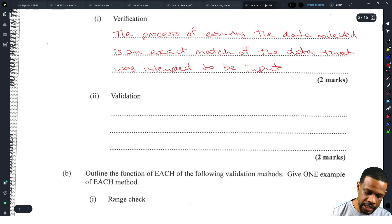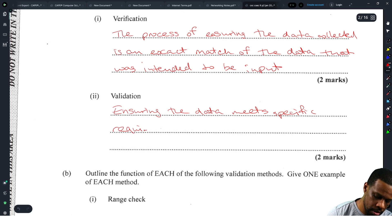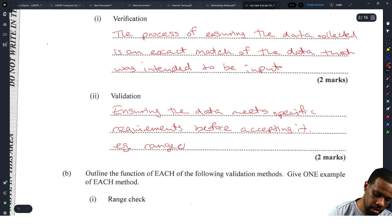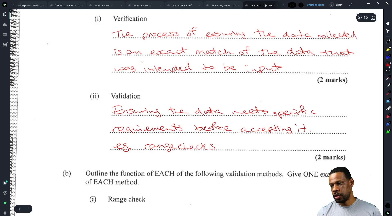Validation is the process of ensuring the data meets specific requirements before accepting it. They can turn out an example for good measure. Example: range checks. You'll probably want to give an example here. Example for this: double entry.